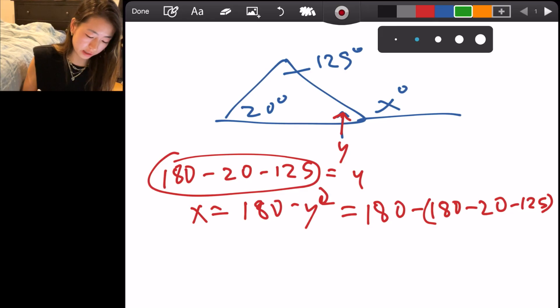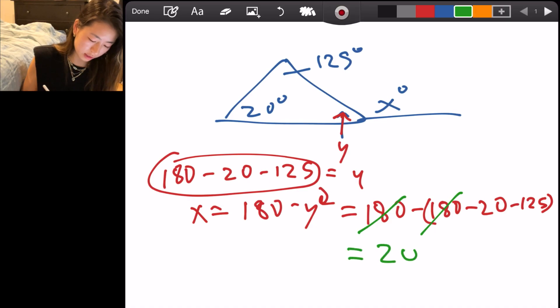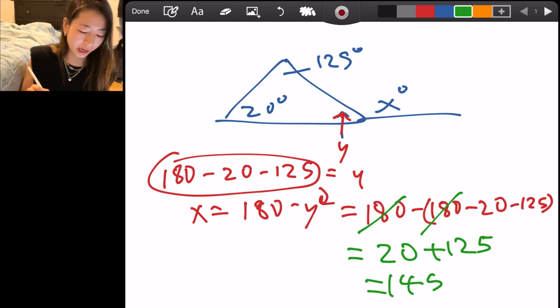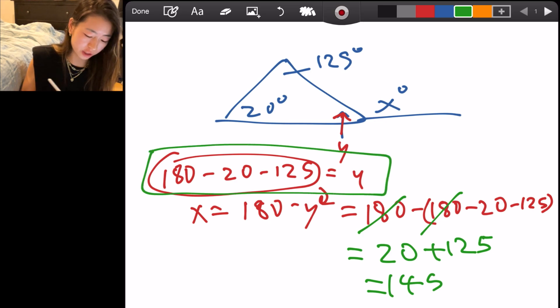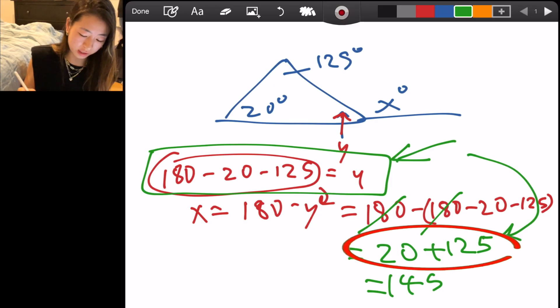And that's the beauty of simplification because look, 180 and 180 cancel. So then your answer will just be 20 plus 125 and that you can do in your head which is going to be 145. And that's so much easier and quicker than if you had gotten y first by doing 180 minus 20 minus 125. Also because subtraction is harder than addition. This is a lot harder to do than just adding 20 and 125.